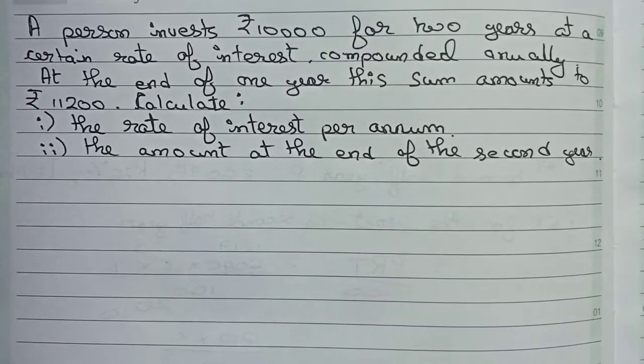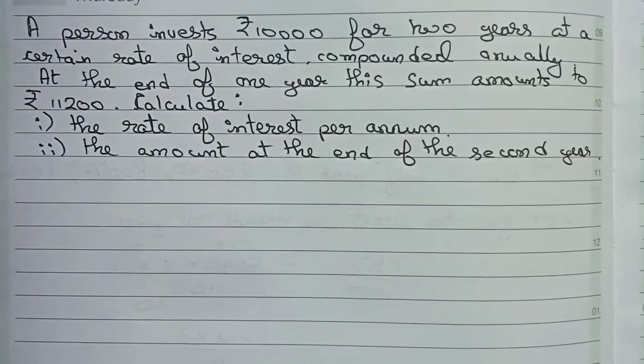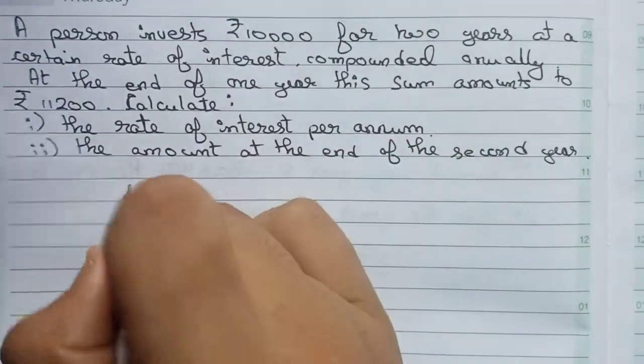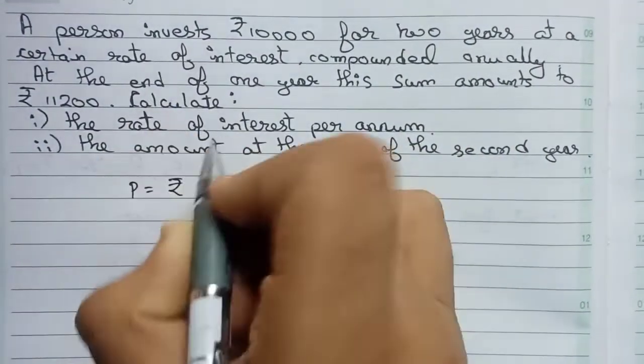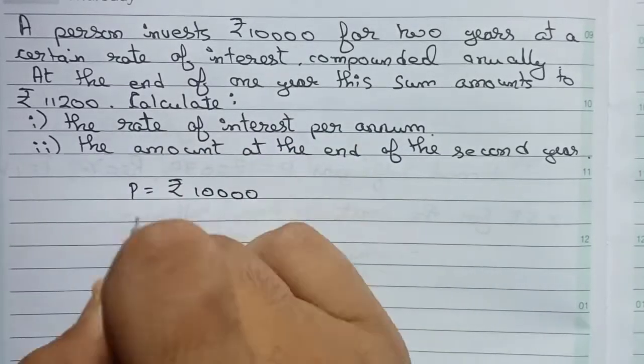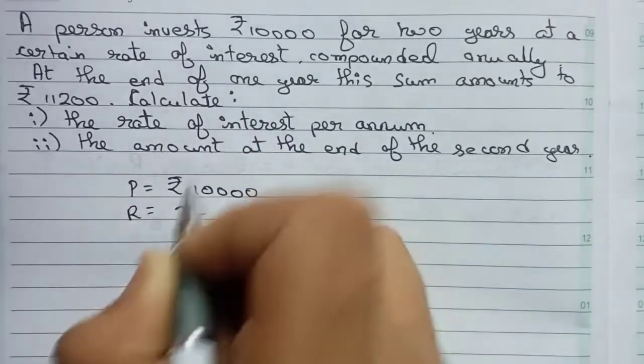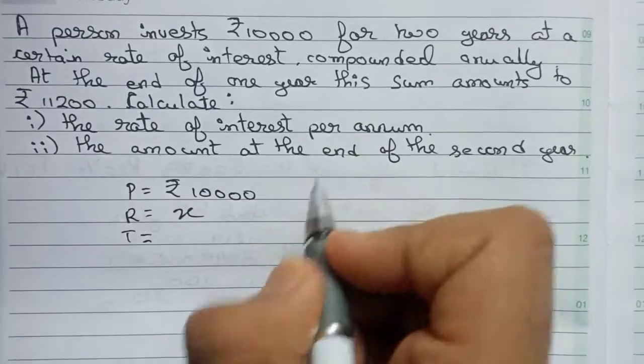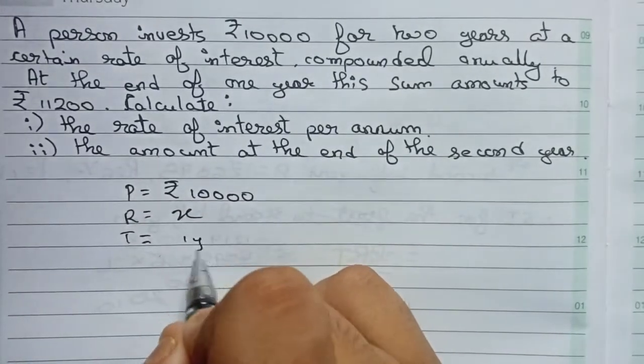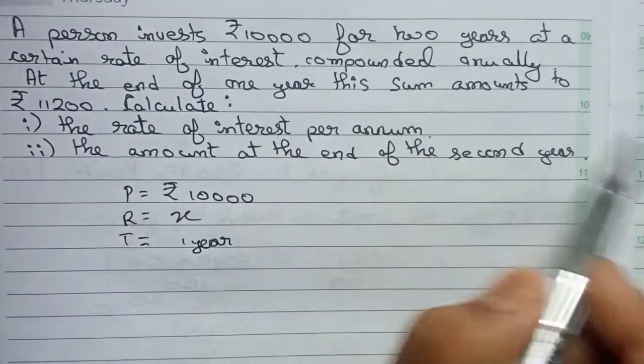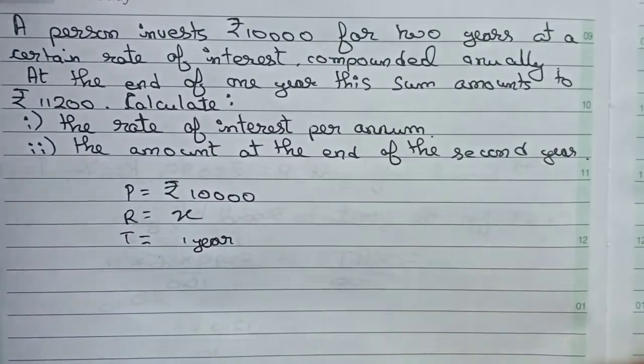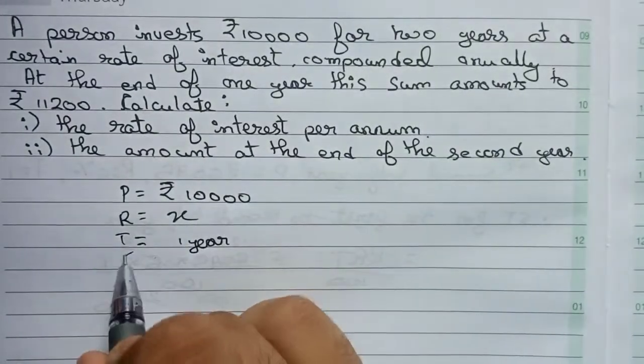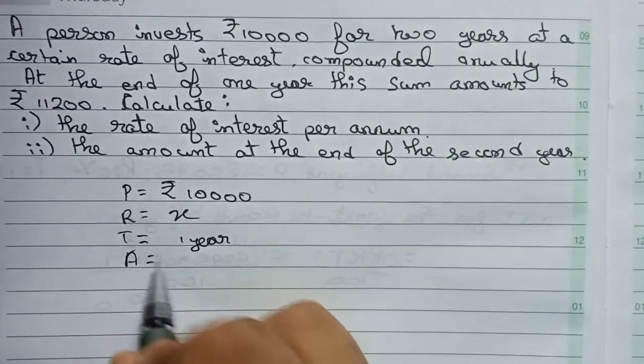So in this question we'll use the simple interest formula. For that, first we write the principal, which is given as rupees 10,000. Now rate is not given, so we take it as x. The time is given as one year. As mentioned in the question, after the end of one year the sum amounts to rupees 11,200.